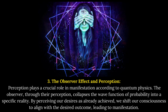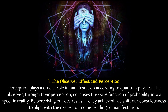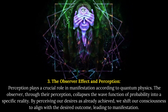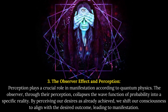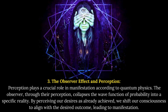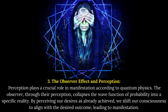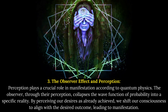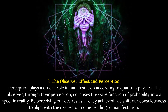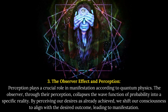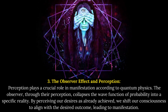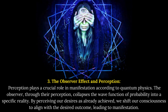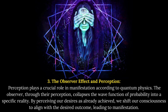The Observer Effect and Perception. Perception plays a crucial role in manifestation according to quantum physics. The observer, through their perception, collapses the wave function of probability into a specific reality. By perceiving our desires as already achieved, we shift our consciousness to align with the desired outcome, leading to manifestation.